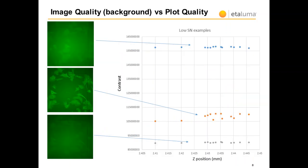In this slide, background is increased with gain, and the resulting plots are shown. It should be said that even small peaks in the plot can be used to find focus, but its reliability will decrease.